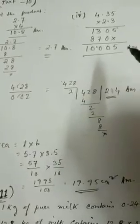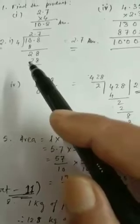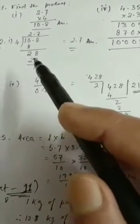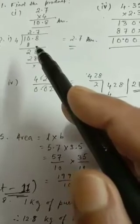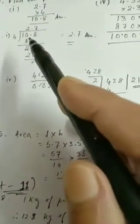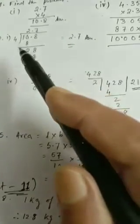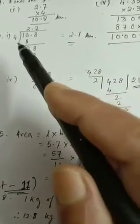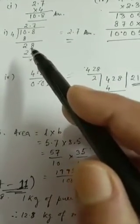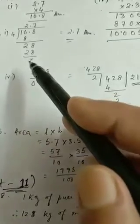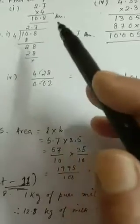This way you can do other sums also. Now next, sum number 2: you have to divide. Number 2 — divide 10.8 by 4. So write 10.8 divided by 4. 4 goes into 10 two times; subtract to get 2, bring down 8 to get 28. 4 goes into 28 seven times. So you get 2.7.